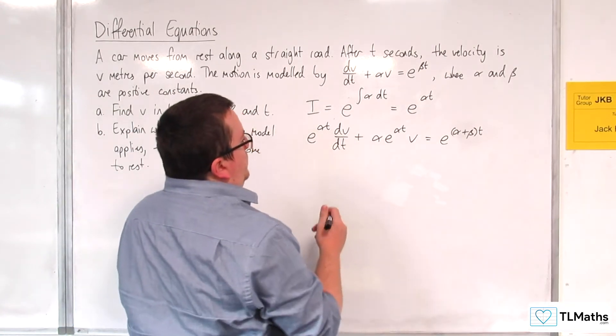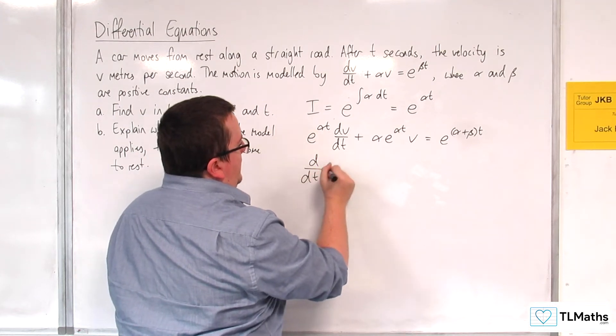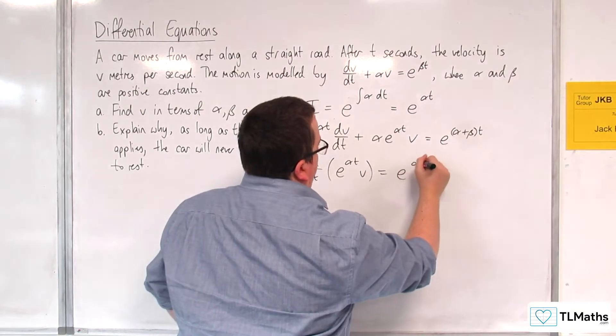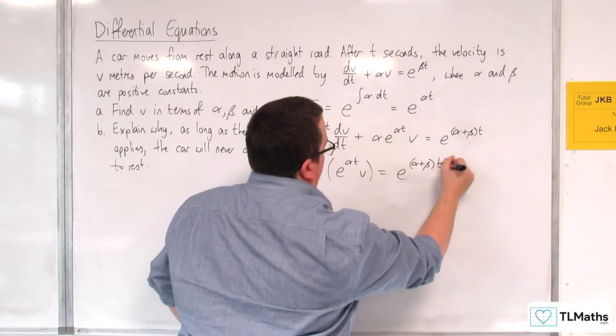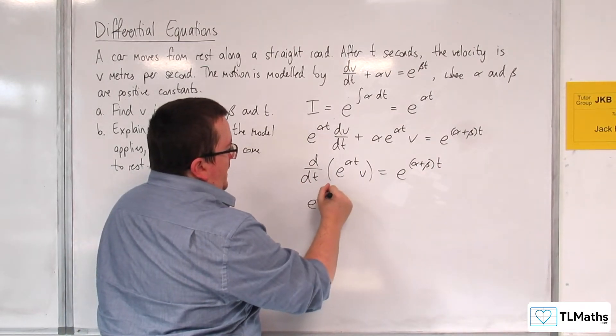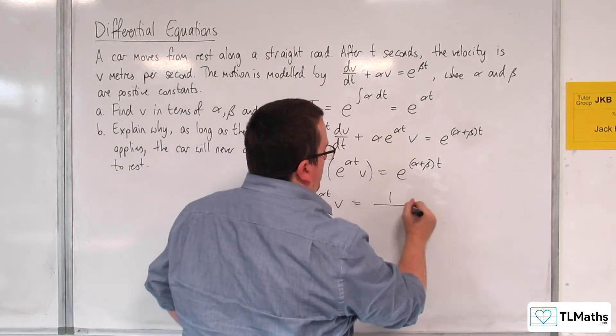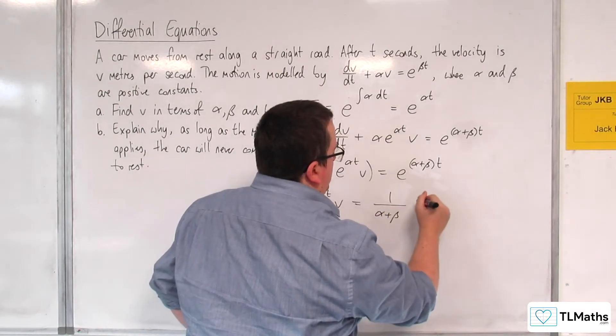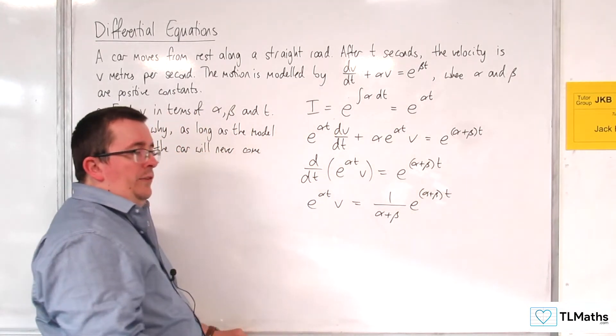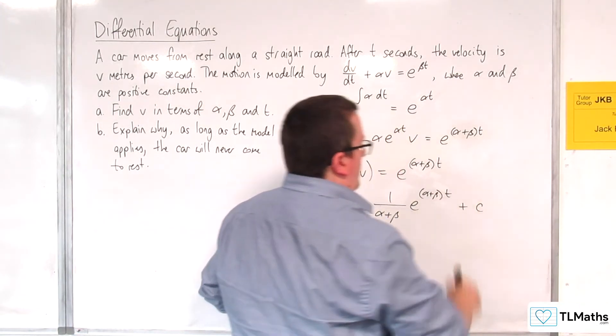Now, the left-hand side, we need to spot is a perfect derivative, so d/dt of e^(αt) times v. So the left-hand side, integrating, we get e^(αt)·v. And the right-hand side, integrating, we get 1 over (α+β) times e^((α+β)t) plus some constant c.